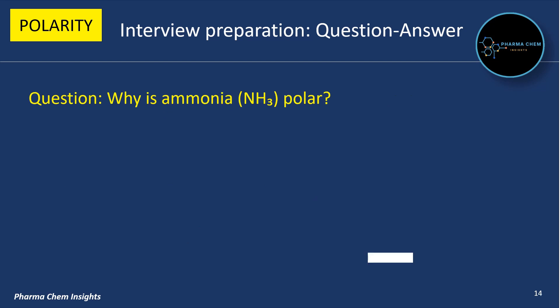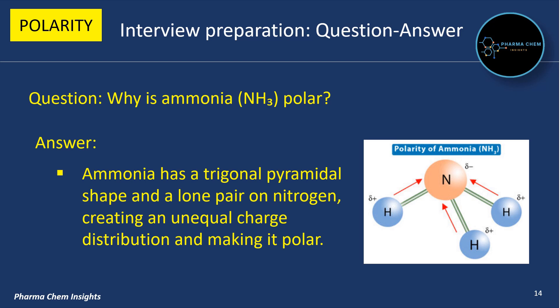Next question: why is ammonia (NH3) polar? Answer: ammonia has a trigonal pyramidal shape and a lone pair on nitrogen, creating an unequal charge distribution and making it polar.